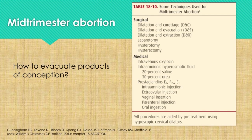For mid-trimester abortion, techniques for evacuation include surgical or medical evacuation, usually preferring surgical evacuation in the form of dilatation and curettage, dilatation and evacuation, dilatation and extraction, or hysterotomy especially if the pregnancy is far advanced in the mid-trimester.